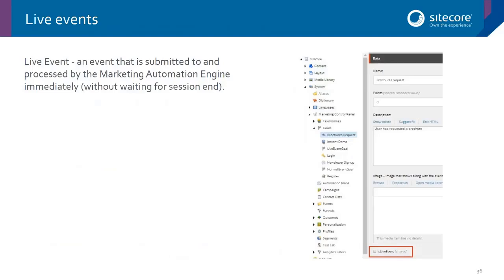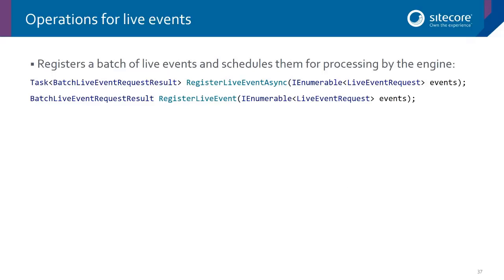As mentioned earlier, we have live events in Sitecore 9. Traditionally, events on interactions were not processed until the interaction was submitted, which can be a problem in some cases. This is solved by live events, which are submitted immediately — allowing you to do personalization during the contact's journey. Be careful about performance though, as anything done live comes with a cost. You can also manually register a live event, or a batch of events, using the marketing automation operations API.